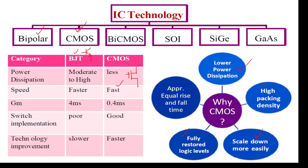Switching implementation is very good in CMOS compared to bipolar technology. Technology improvement is also very fast, as per Moore's Law, but bipolar technology is slower than CMOS technology. As we know, bipolar technology is a current control device, but CMOS technology is a voltage control device.